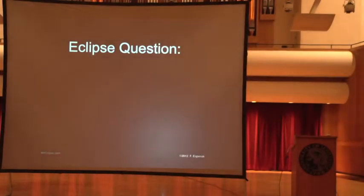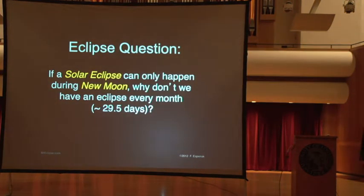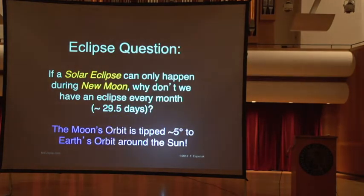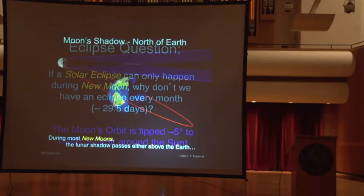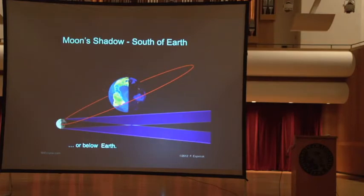Well, talking about the basic mechanics of an eclipse, you might think, if eclipses only occur at New Moon, and we have a New Moon every 29 and a half days, why don't we have a total eclipse every month? And the reason is that the Moon's orbit is tipped about 5 degrees to the Earth's orbit around the Sun. What does that mean? It means most of the time during New Moon, the Moon's shadows pass above the Earth or they pass below the Earth.